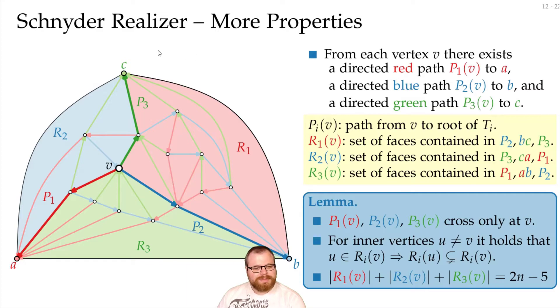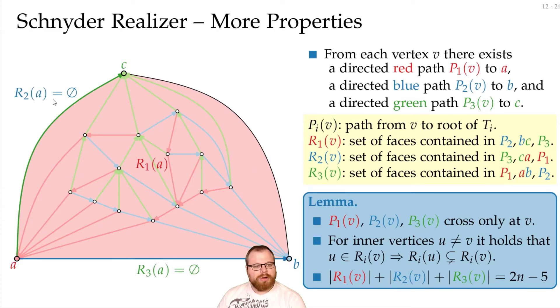I want to briefly note the special case of the outer vertices. For example, if we look at a, then all the faces lie in region 1, and no faces lie in region 2 or region 3. The same with b, everything lies in region 2, and c, everything lies in region 3.